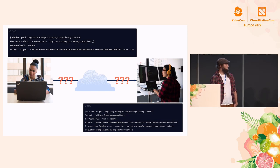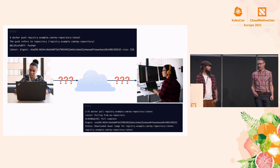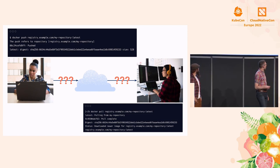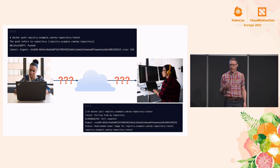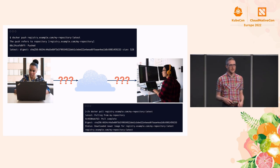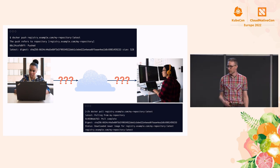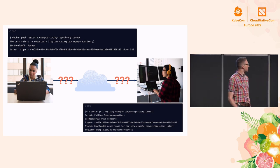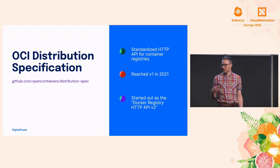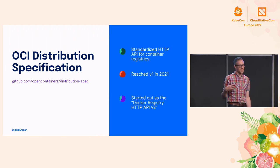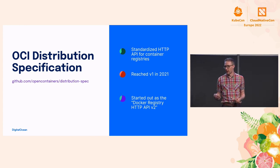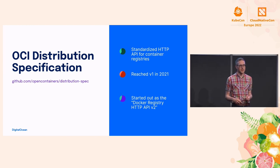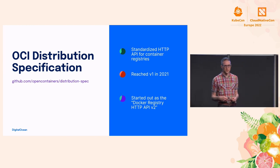One mystery we haven't talked about is those ASCII arrows that fly across your screen when you do a push. How does your container image actually get to the registry? The answer is the OCI Distribution Spec — the HTTP API that's been standardized and that registry clients use to talk to registry servers. It reached V1 last year, so now it's really official.